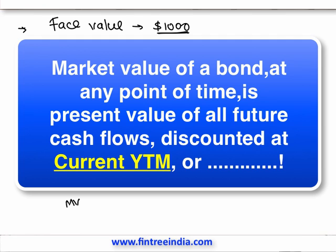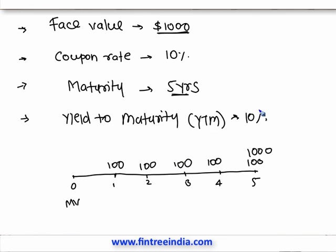This current YTM, think of it simply as the market interest rate — the rate of interest that exists in the market. This YTM can change every day or every minute, and therefore your bond value can also change every day or every minute. Coupon rate is fixed and does not change, but YTM keeps changing. So going forward, when someone talks about 'interest rate,' they are not talking about the coupon rate — they are talking about YTM, which is the market interest rate.